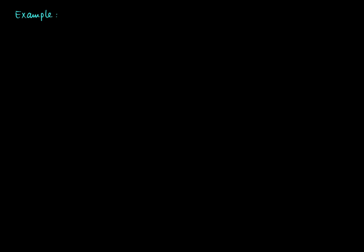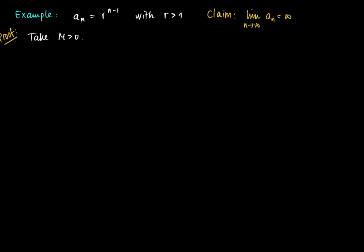Now consider another example: let a_n = r^(n−1), where r is a constant larger than 1. Our claim is that the limit of this sequence is infinity. We prove it as follows: take an arbitrary m greater than 0, but fixed. Then we need to show that at some point a_n is at least m for all indices n larger than some fixed capital N — that is, r^(n−1) ≥ m.